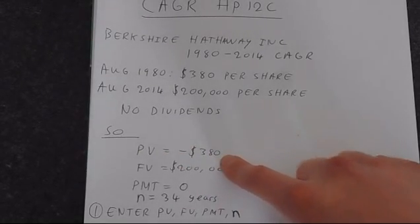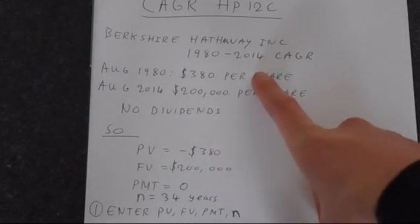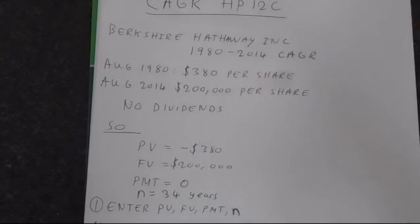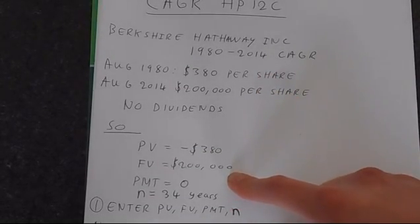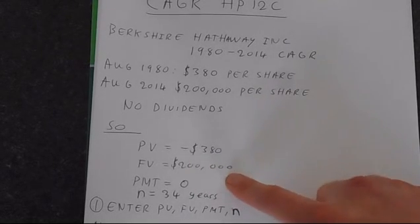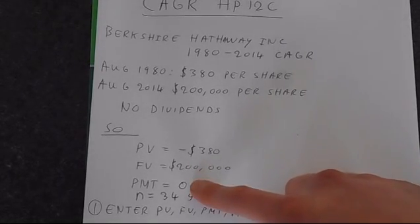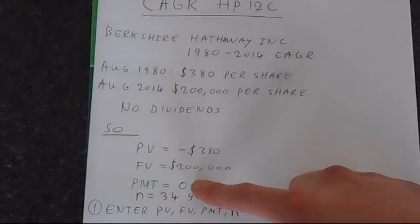Present value, we've got minus $380, because it's an investment. We're buying one share of Berkshire for $380, so $380 is going away from us. The future value is what this share is going to be worth in the future. Remember, no dividends. So that's $200,000. As we've got no dividends, we can put payments equal to zero.